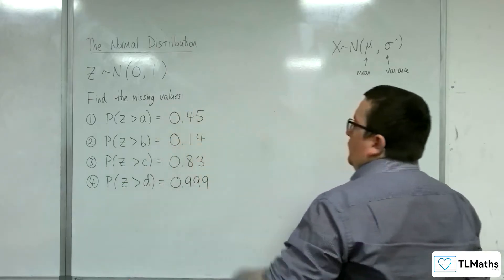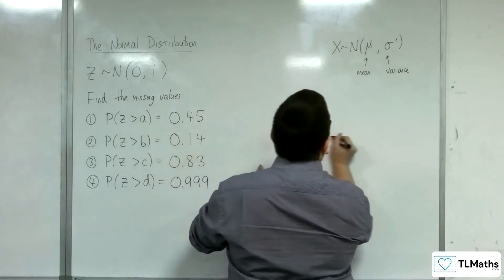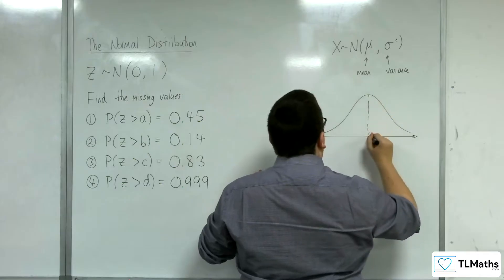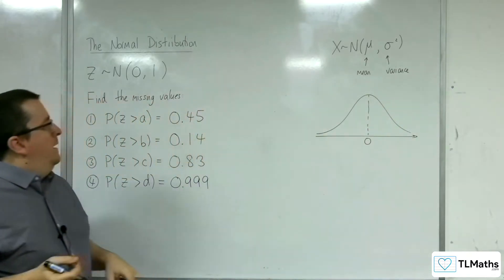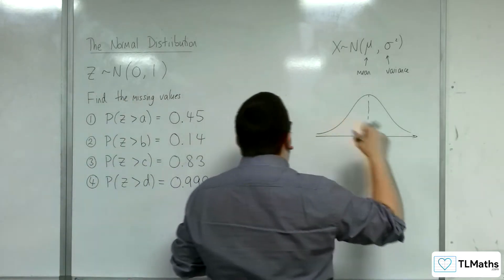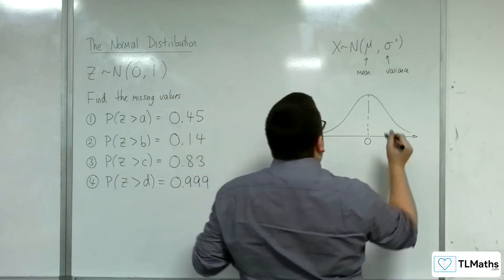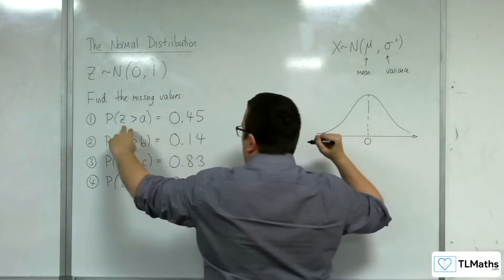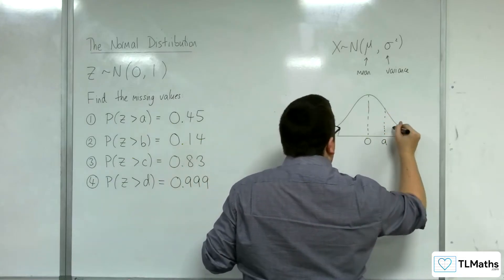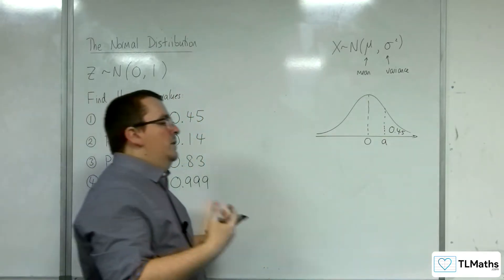So let's interpret what these mean. Number one: the probability of z being greater than a is 0.45. If I draw a diagram, here's my normal distribution, the mean is 0. Somewhere along this axis there is a value of a, so the probability to the right is 0.45. That would mean a is here, so that area is 0.45.